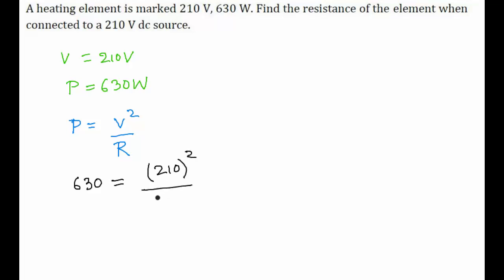So R is equal to 210 volts squared divided by 630, which is equal to 70 ohms. So the resistance of the element is 70 ohms when it is connected to a 210 volt DC source.